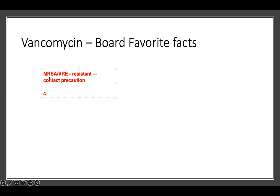It's also used for C. diff infection. These are the big infections that vancomycin can be used for: MRSA, VRE, and C. diff. Those are very, very important.